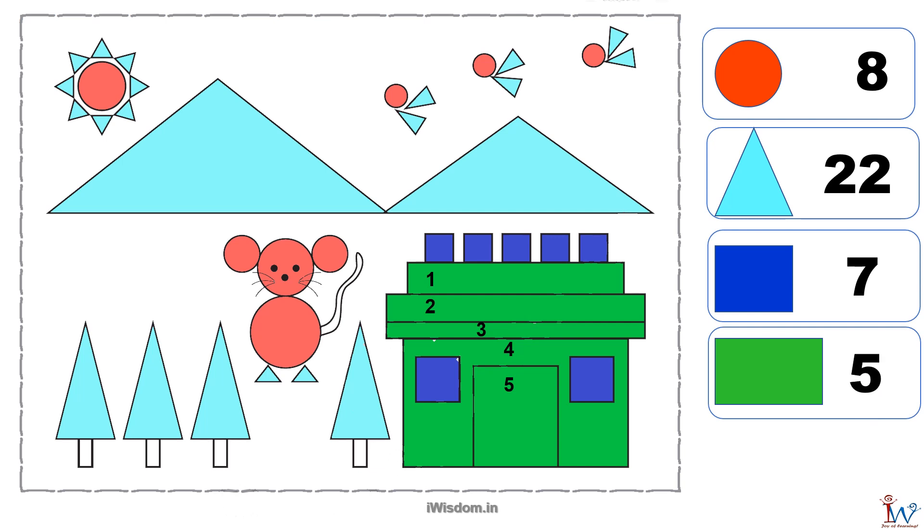How about the trunk of the trees? Oh, no again I missed them. Four trees have four trunks that are rectangular. So six, seven, eight and nine. A total of nine rectangles.